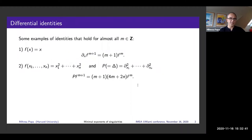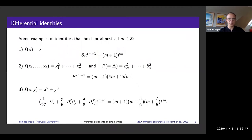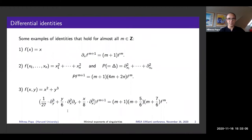Something slightly harder to guess: the simple cusp in the plane, f(x,y) = x² + y³. It's harder to come up with a differential operator, but it's possible — you can consider an expression in partials of x and y with some functional coefficients. If you apply this differential operator to f^(m+1), you obtain the polynomial relation (m+1)(m + 5/6)(m + 7/6) times f^m.